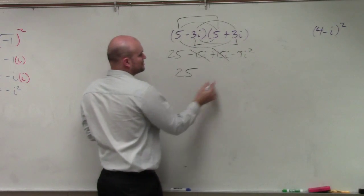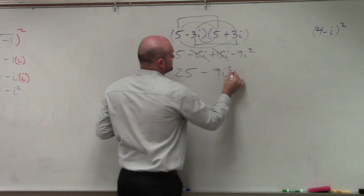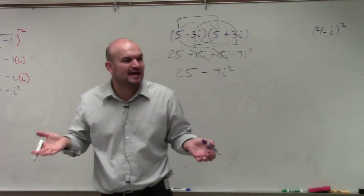and then multiply your last two terms, which is going to be a negative 9i squared. You don't have to worry about the middle terms, because you're going to know they're going to add to zero.